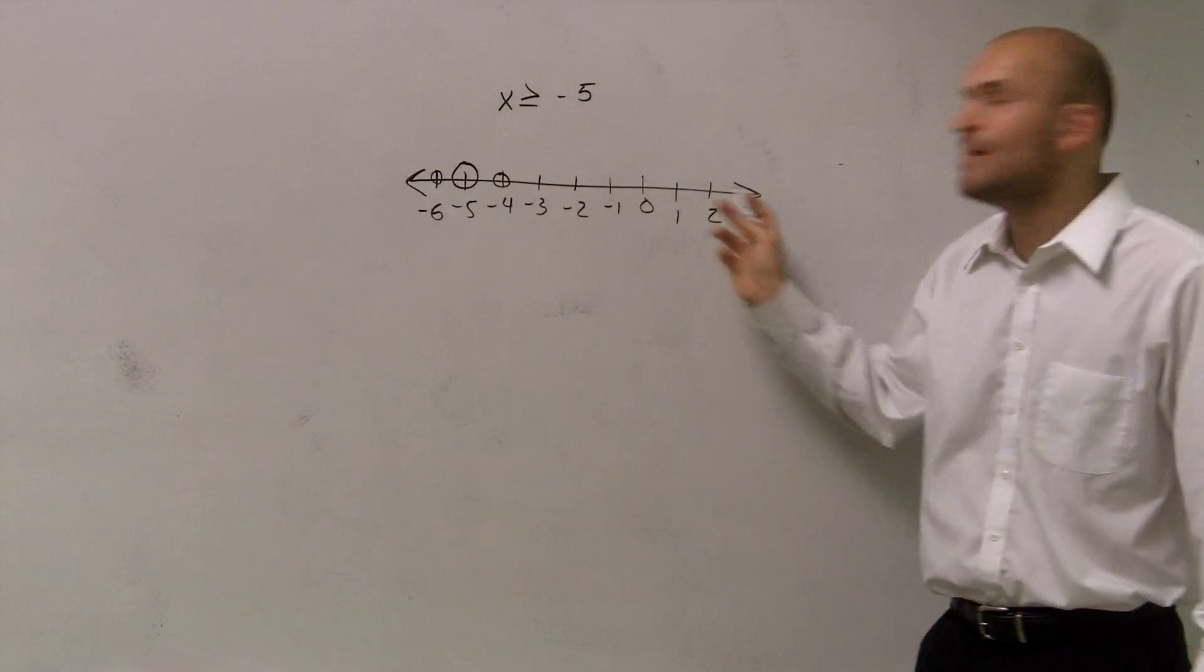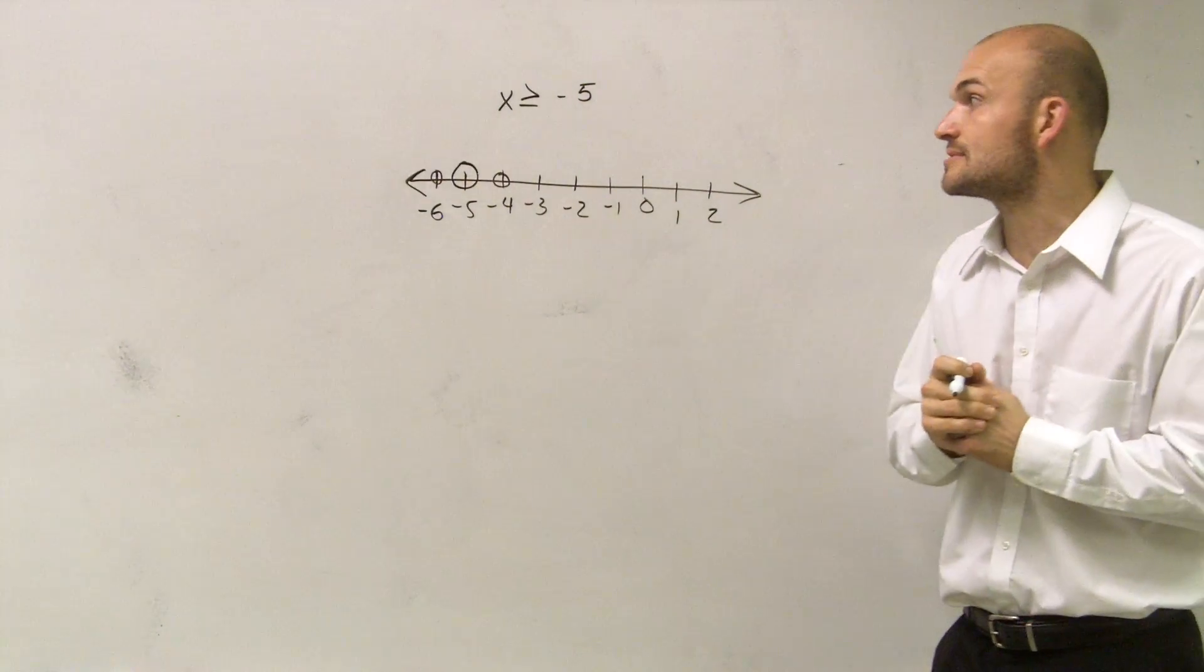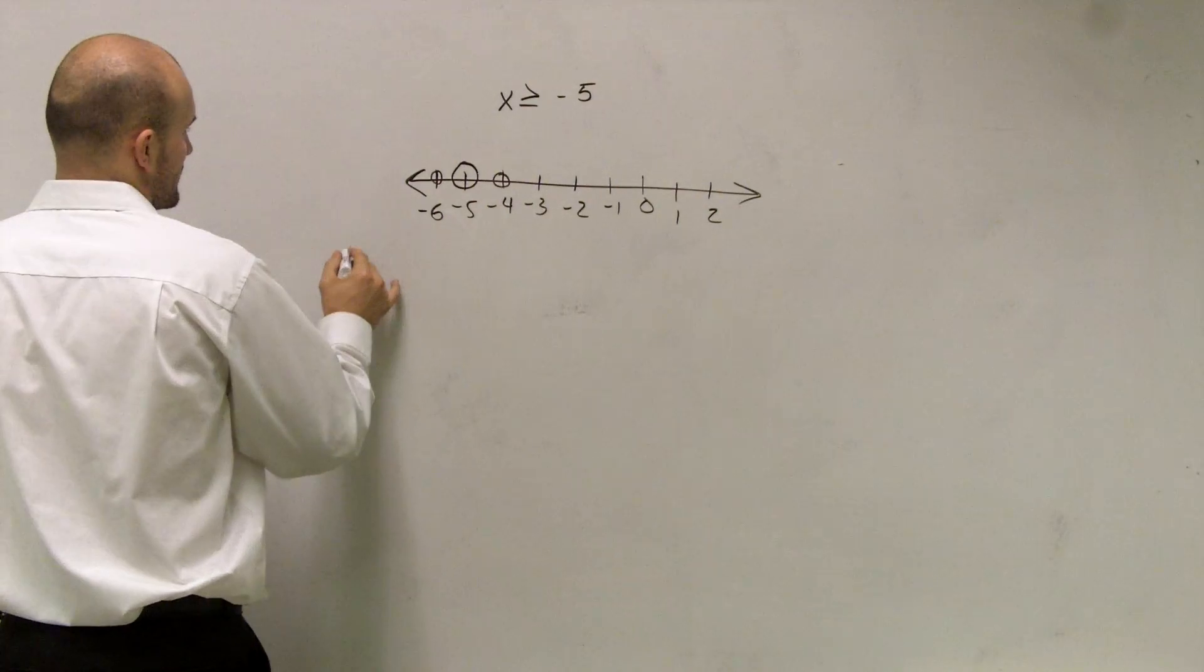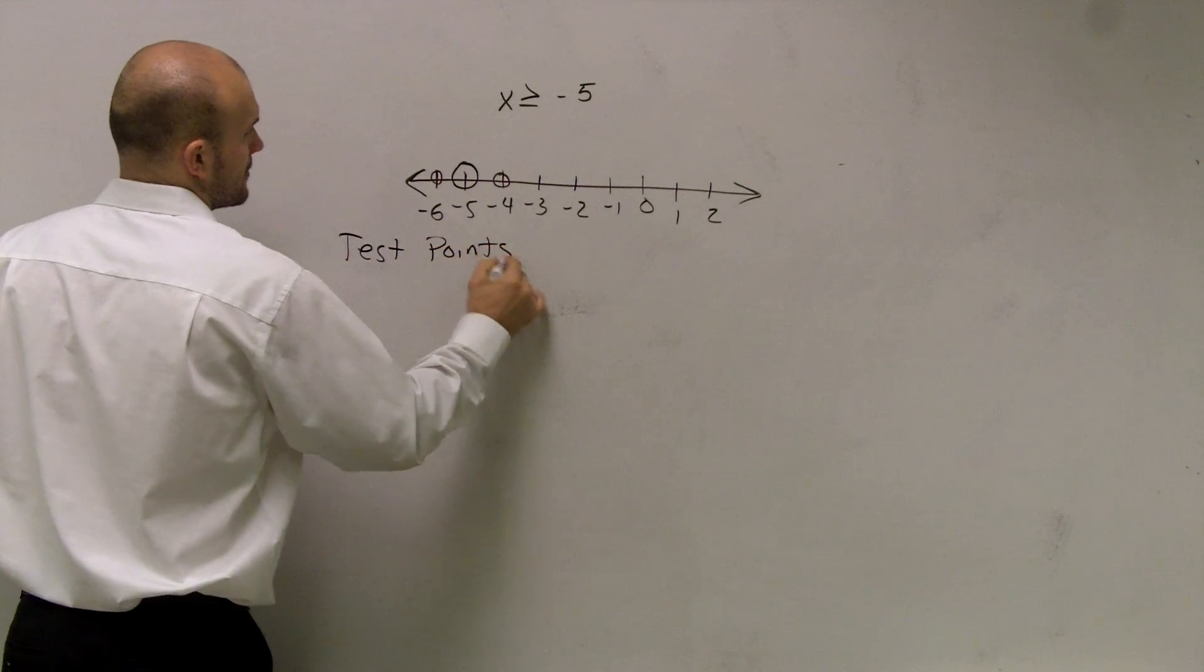You can pick negative 10 and positive 10. It doesn't matter which point. It's kind of like when you guys were creating a table of values. So now what you're going to do is you're going to plug in. So these are what you call your test points. Okay?